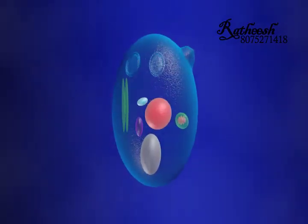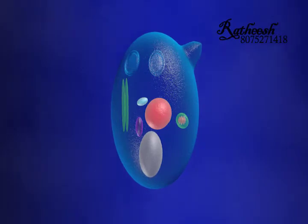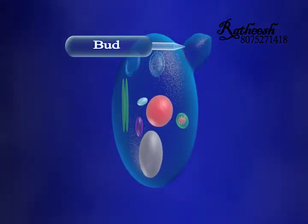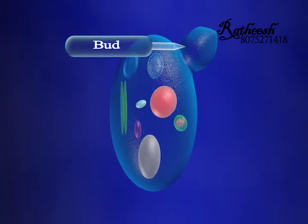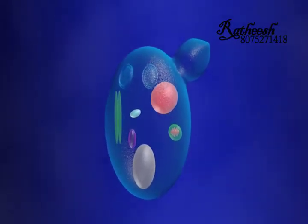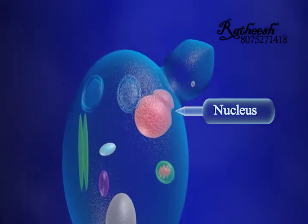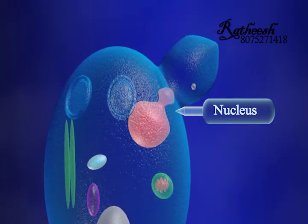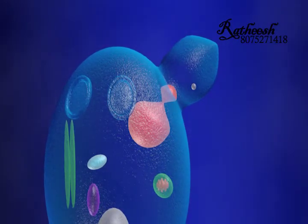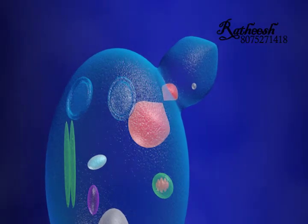In yeast, buds arise as small cytoplasmic outgrowths from the parent cell. This is followed by the division of the nucleus. The nucleus of the parent cell divides into two and one of the daughter nuclei migrates into the bud.